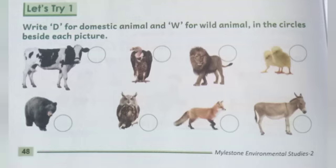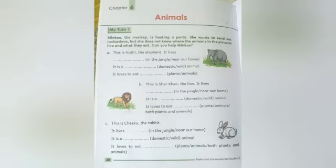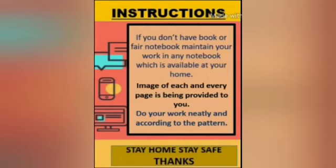Now we will do let's try one. Write D for domestic animal and W for wild animal in the circles beside each picture. You have to do this activity in your practice book. Read the given instructions also. We will meet soon. Stay home, stay safe. Bye bye.